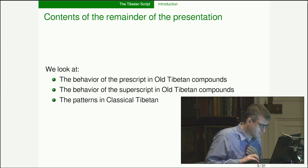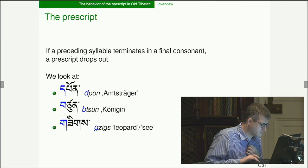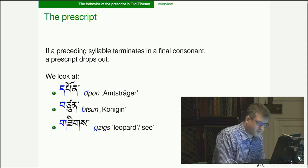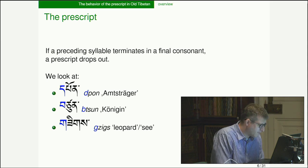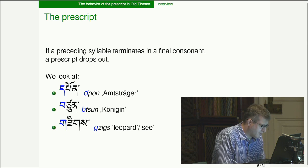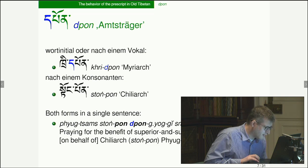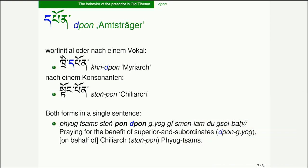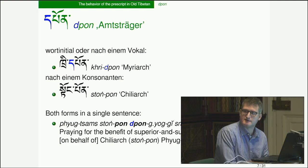We're going to look at the behavior of prescripts in ultimate compounds, the behavior of superscripts in ultimate compounds, and the pattern in classical Tibetan. Looking at the prescript with three morphemes — 'pun' meaning official, 'tsun' meaning queen, and 'zik' meaning leopard — when word-initial or before a vowel, you keep the prescript. For example, in 'tri-de-pun,' meaning 'myriarch,' you keep the 'd' because it follows a vowel.